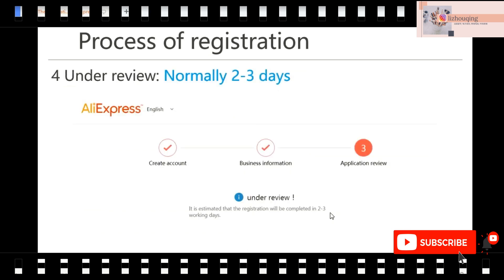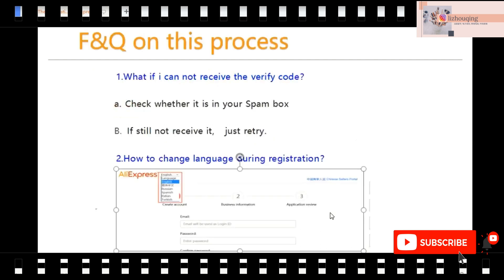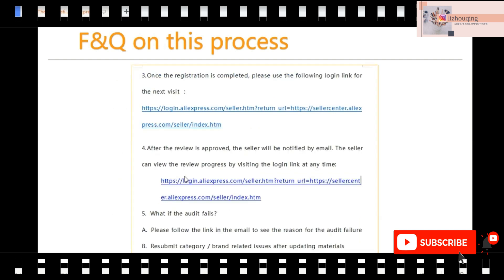After you submit, normally it takes two to three working days to pass the review. Here are some questions on this process. What if I cannot receive the verify code? First, go to your spam box to check whether it was recognized as spam. If you still don't receive it, just retry and resubmit the information. How can I change the language during registration? You can directly click the language selection here. Once registration is completed, you need to check it on this website — please keep this website to check the process of your submission. After the review is approved, the seller will be notified by email.